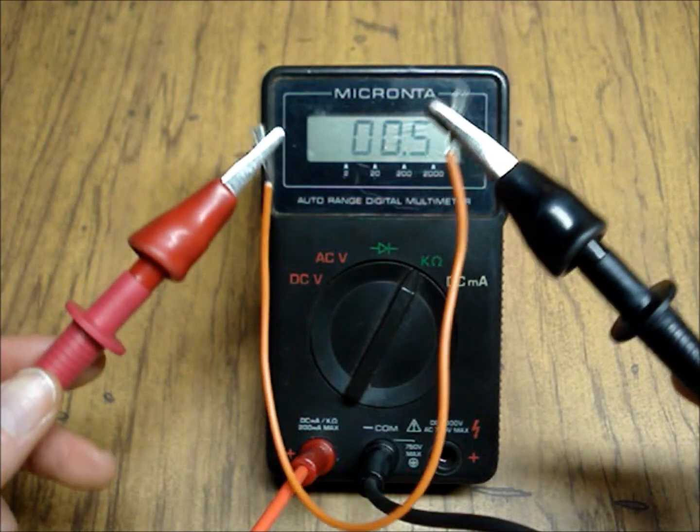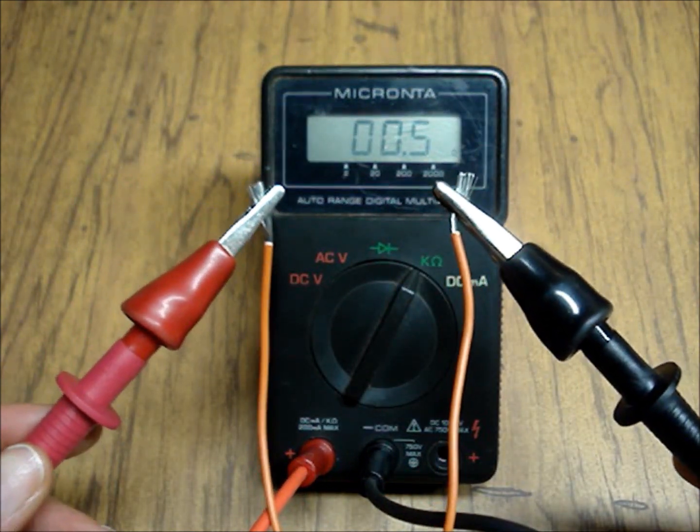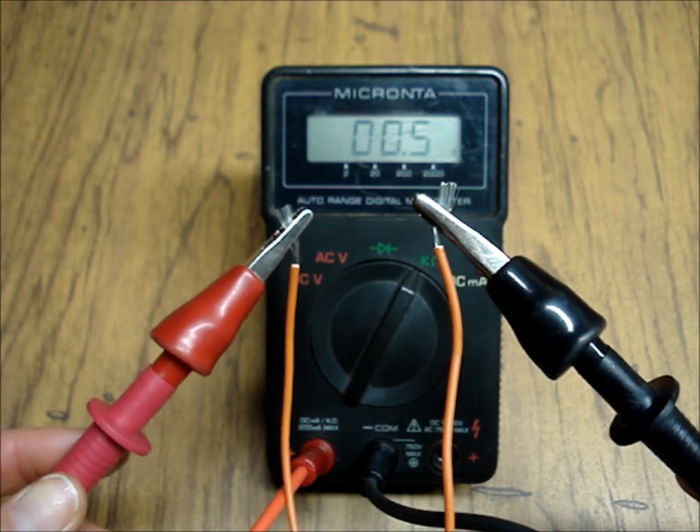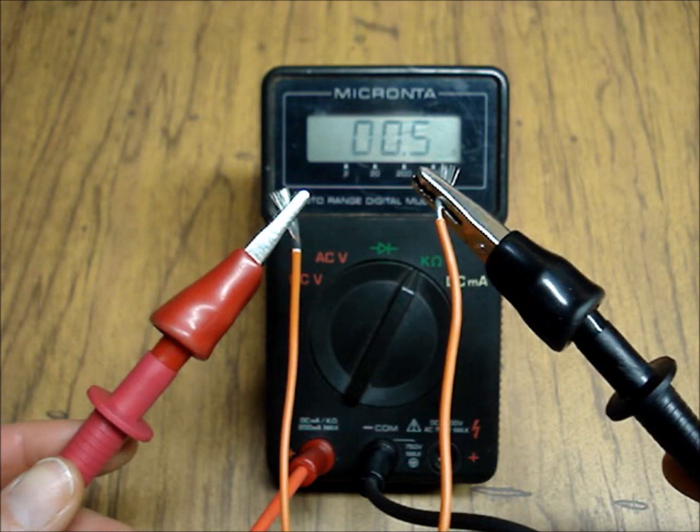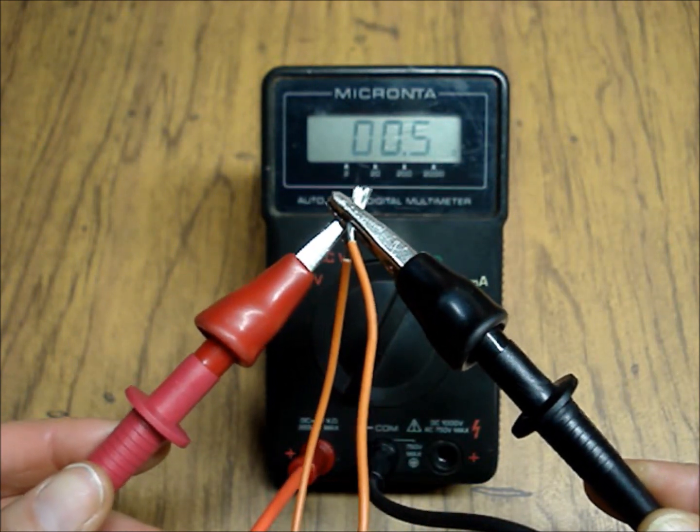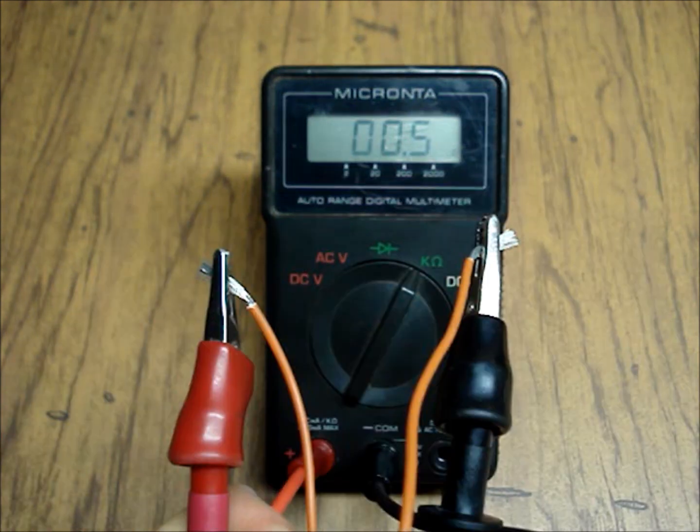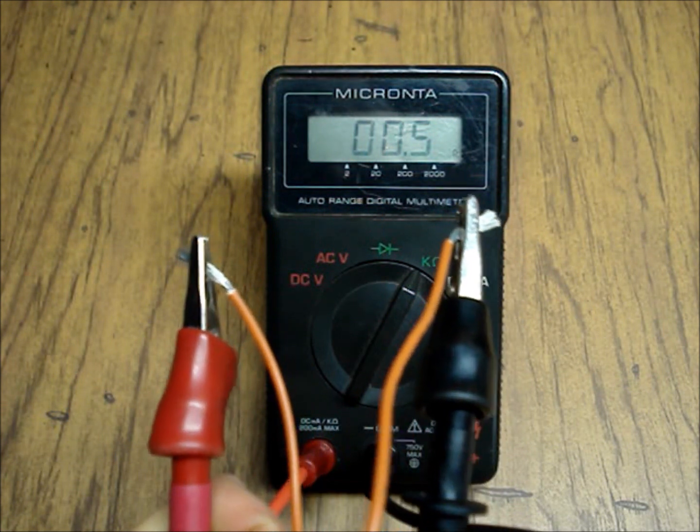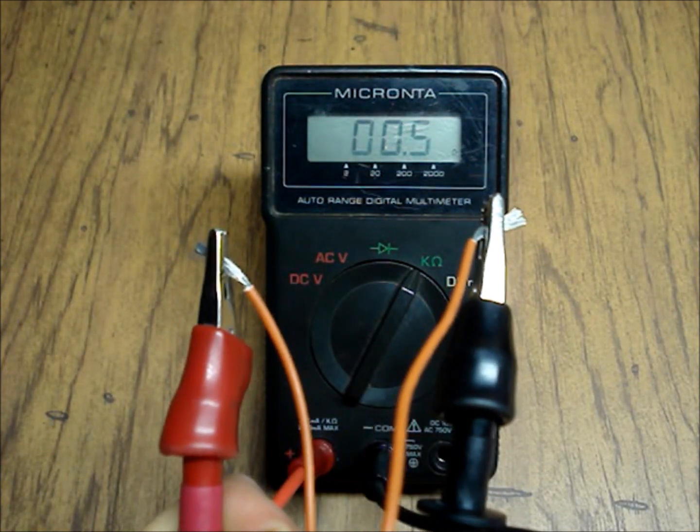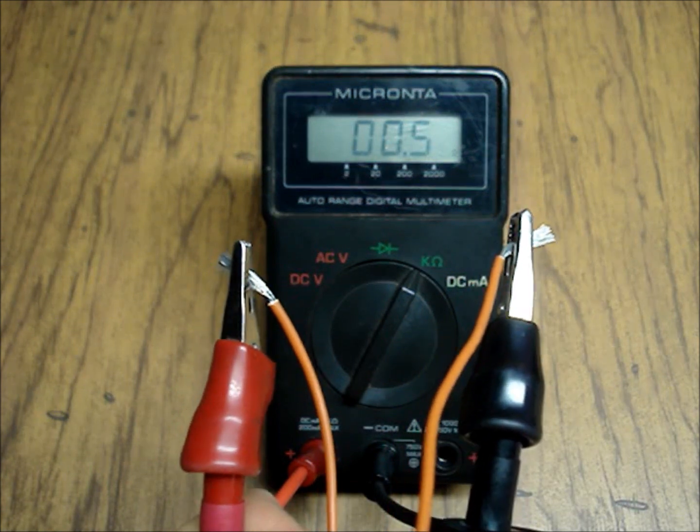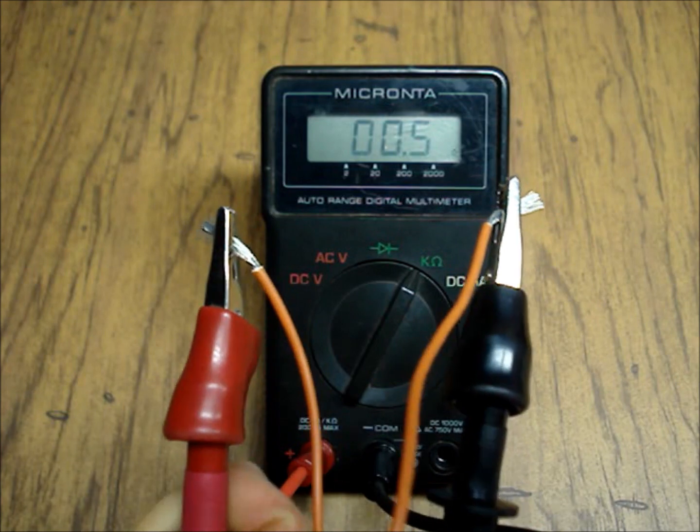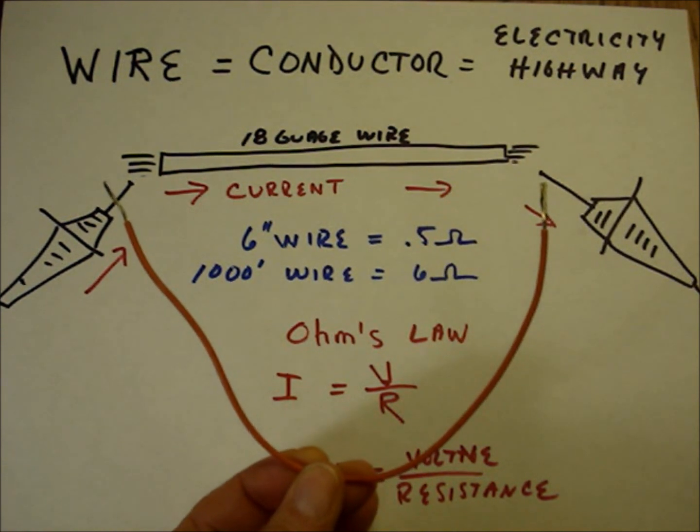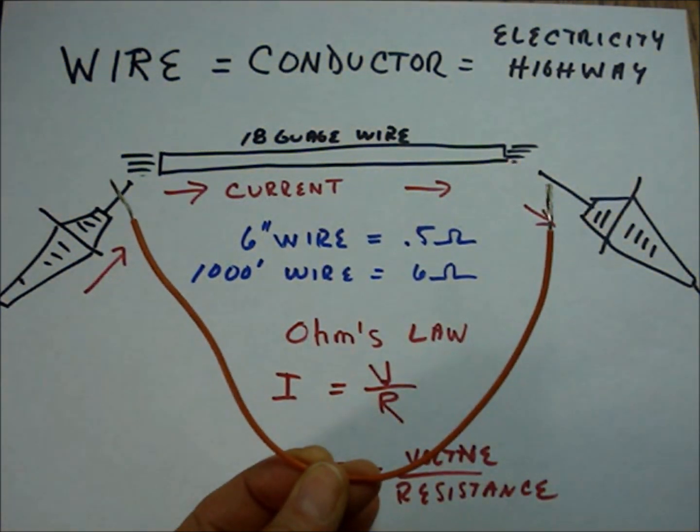The first thing that I'll measure is a piece of wire. And I really don't read any more than a half an ohm as I did when I put the meter leads together. If I would measure a thousand feet of 18 gauge wire, it would read about six ohms.